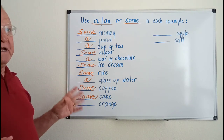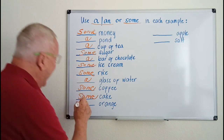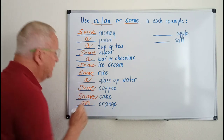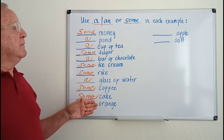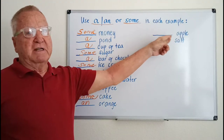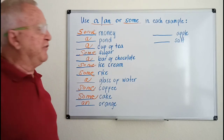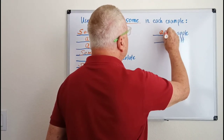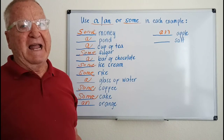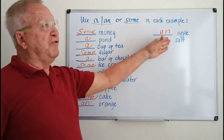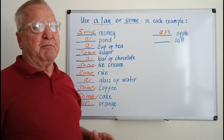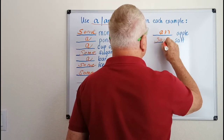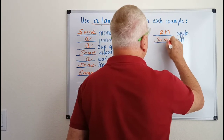An orange — countable, and we use 'an' because it starts with a vowel. An apple — also countable, so 'an apple.' And salt — uncountable: 'some salt.'